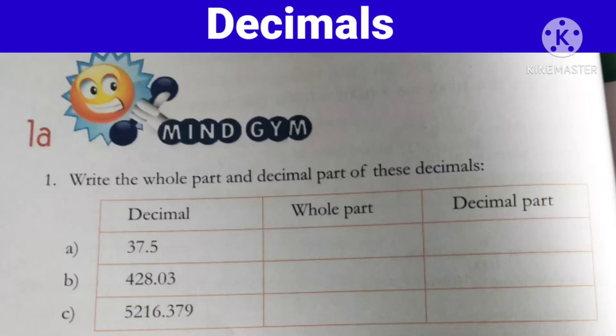Now let us solve some exercise problems to understand whole part and decimal part. Write the whole part and decimal part of these decimals. So here, a) 37.5. Toh bataiye, isme whole part kaunsa hoga aur decimal part kaunsa hoga? Yes, very good — 37 is the whole part and 5 is the decimal part.